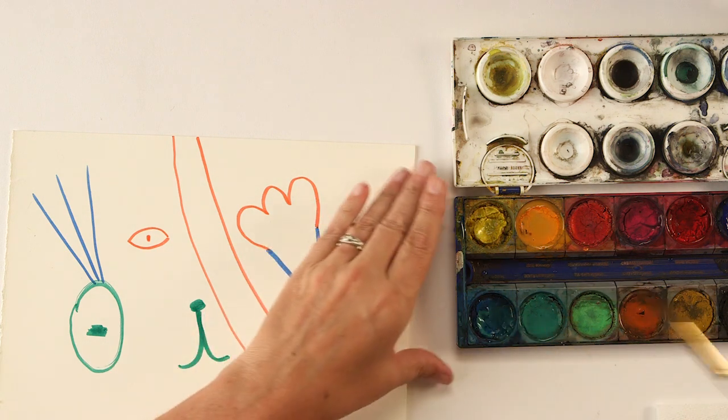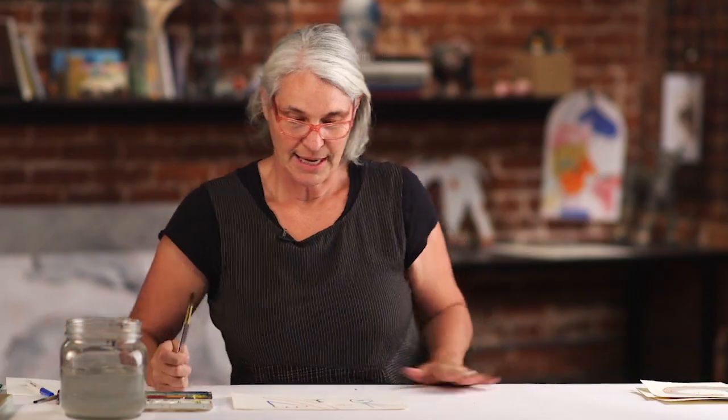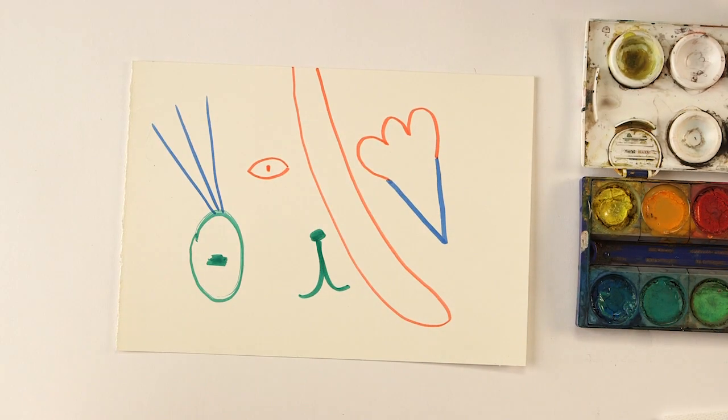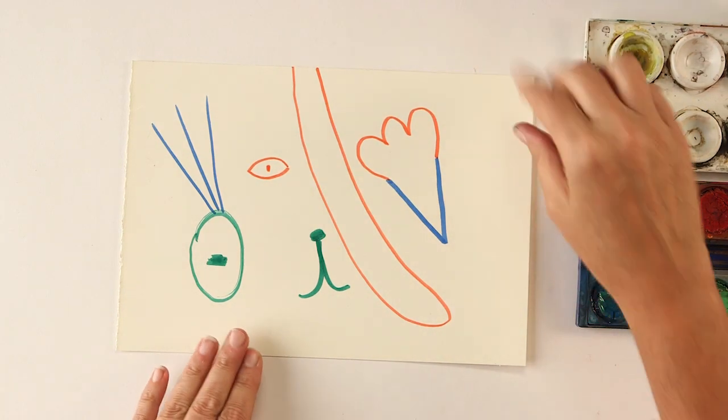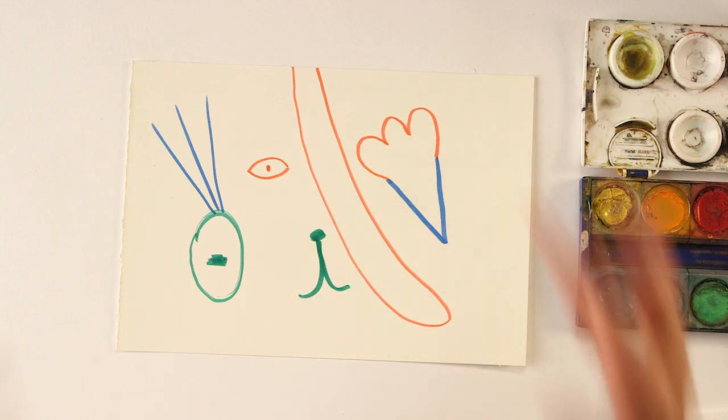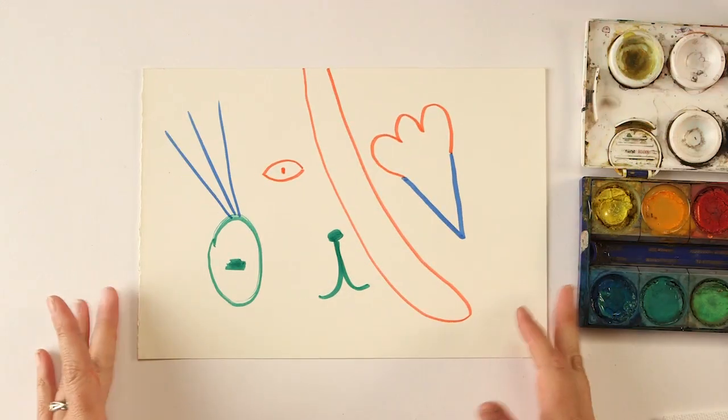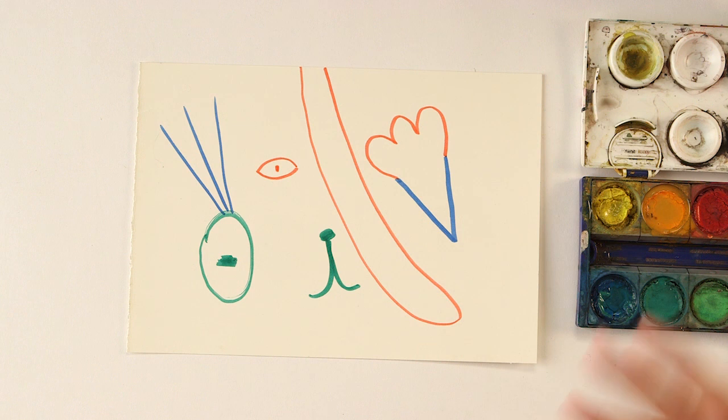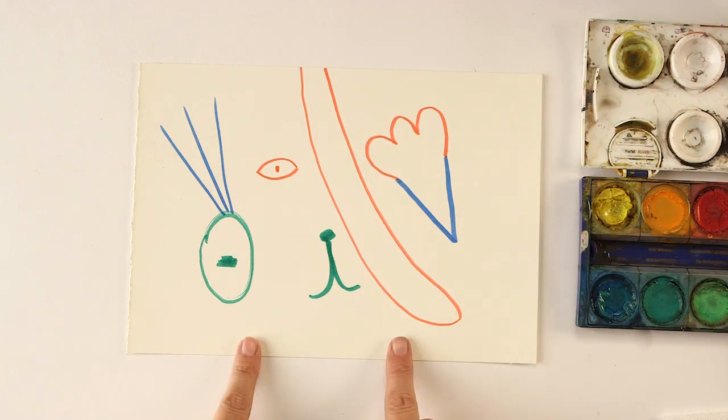Okay. So while that's softening up, I'm going to look at my cat here, my cat parts, and turn my paper like we did our blob animals, and turn my paper and see if there's an orientation or a direction that says cat to me the most. So I kind of like this one.